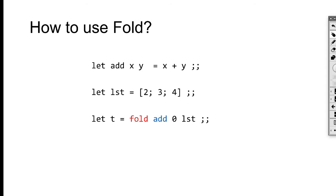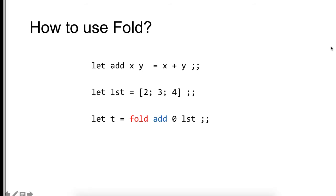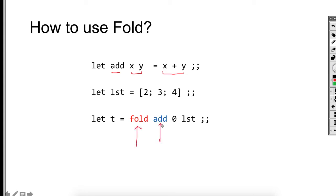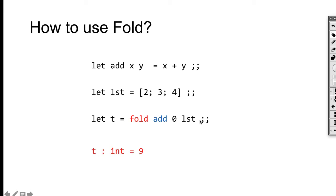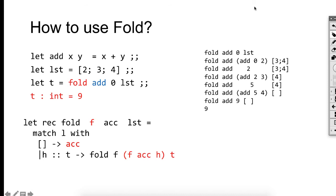So how do we use fold? In this example, we create a function called add. It takes two integers and returns their sum. Fold takes add as the function argument, zero as the accumulator, and a list of two, three, four — and it will return nine, which is the sum of two, three, and four. Now let's look at an execution of fold.